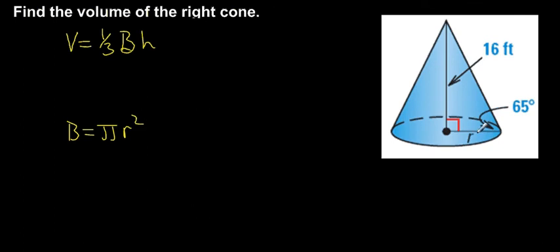But in this case, I'm not given r. So I'm going to have to use some trigonometry, since I have the degree measure of this angle and I know the side opposite that angle. Since the tangent of 65 degrees will be equal to the opposite side over the adjacent side, and my radius is the adjacent side, the tangent of 65 degrees is equal to 16 over the radius.